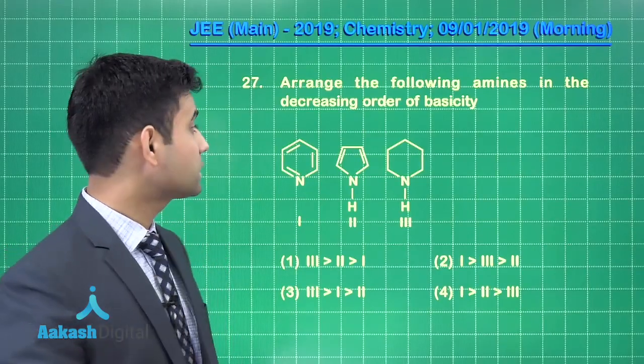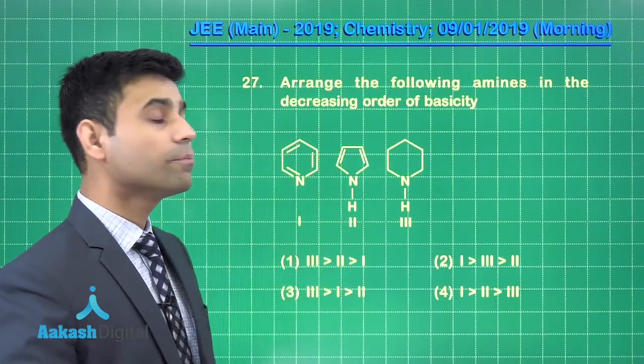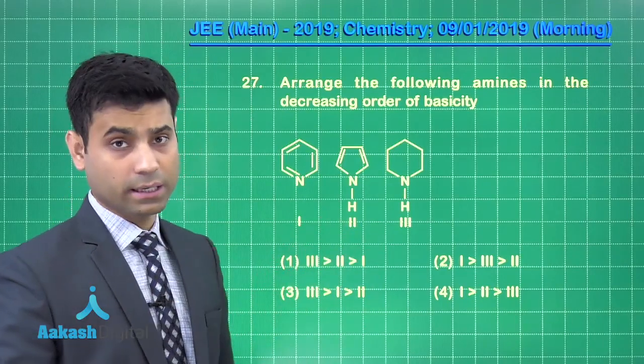This is the next question we have which says arrange the following amines in the decreasing order of basicity. Here we have pyridine, pyrrole and piperidine.